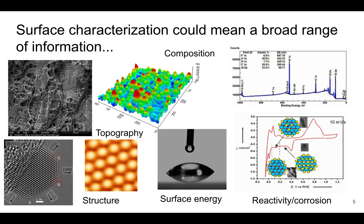We could simply be talking about topography — what does the surface look like? This is an SEM image that I showed you back in the SEM chapters, so we know some techniques where we can get that. Also, this image over here is from AFM, and that can also give us topography of a surface, but at a much finer level.